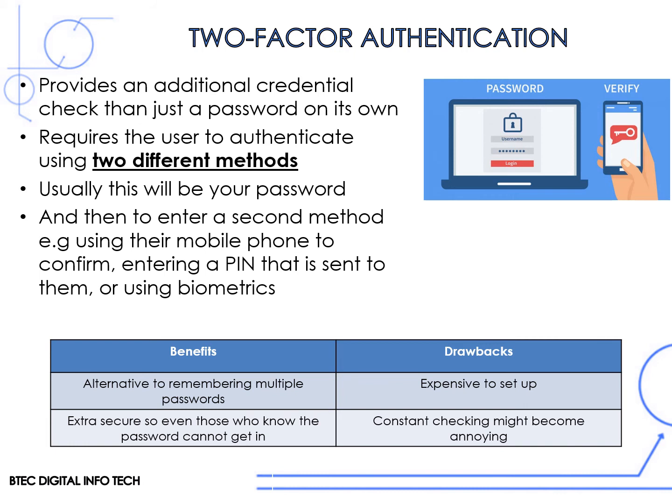Two-factor authentication is a term used to describe any time when there are two different methods used to log into a system. The most common way this is carried out is that people log in using their email or username and password. Once they have logged in, there will be a request sent for additional information. This is usually a PIN number sent to your mobile phone or an email to a different address. Sometimes someone might call you to verify, and on occasion it could be biometrics that are used.